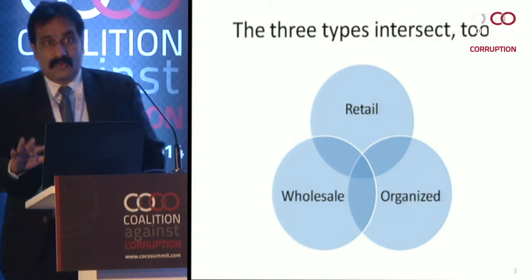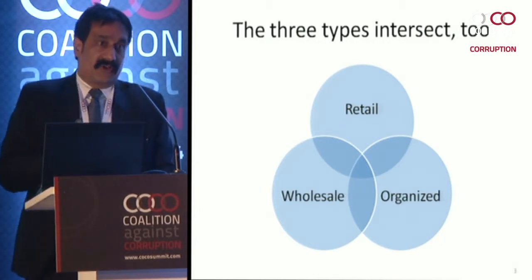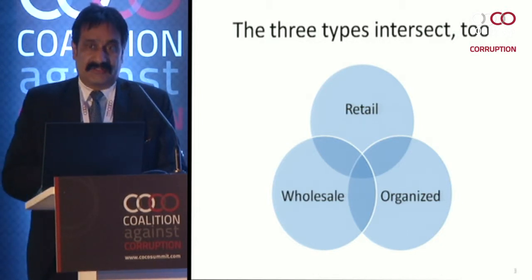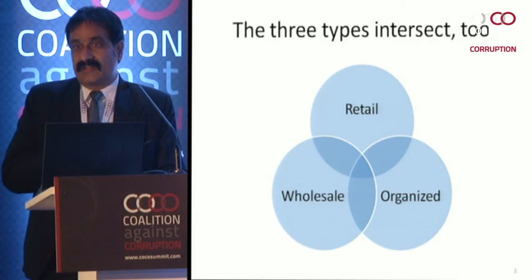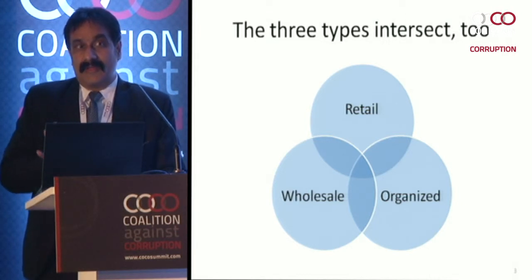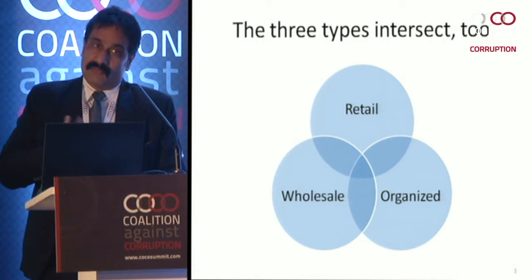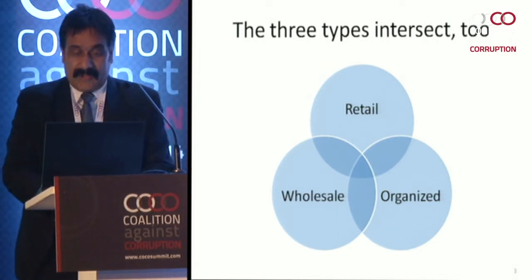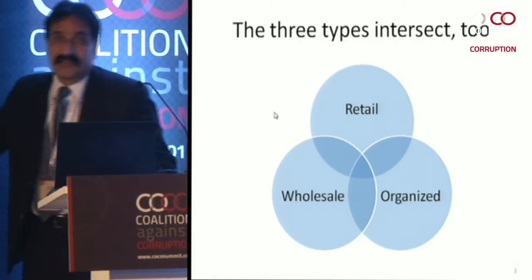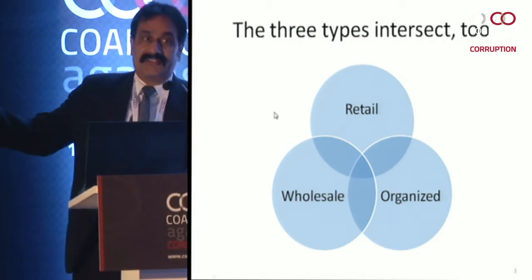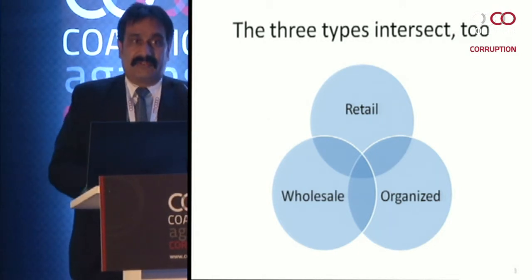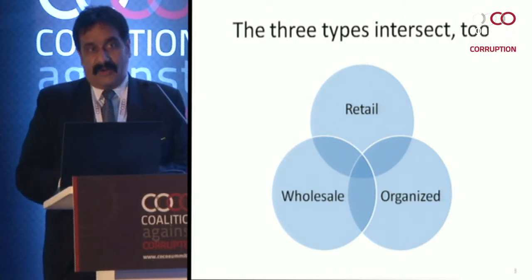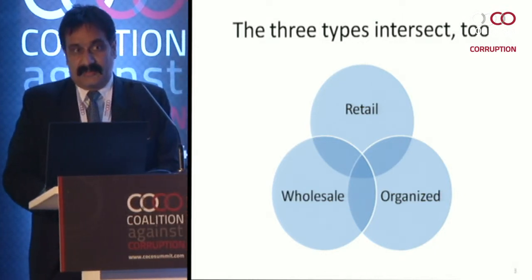To handle these types of corruption, they require different strategies. The best way to understand this is in the form of a Venn diagram, where there are intersections with both retail and wholesale characteristics, organized and retail characteristics, and most importantly a tri-junction where all three operate together. I'll give you an example — a practice story — of how I arrived at this idea.